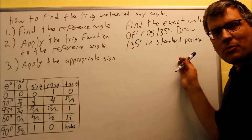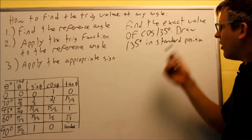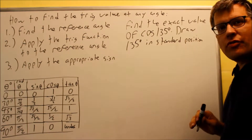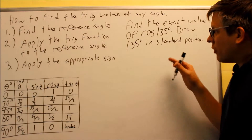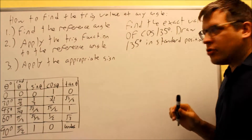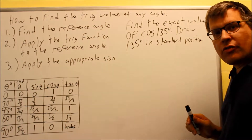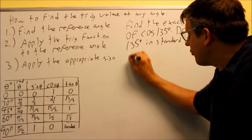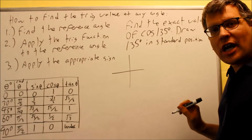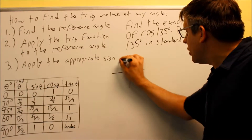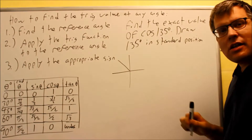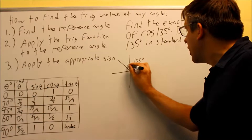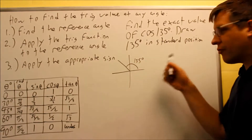Here's the next example problem: find the exact value of cosine 135. Draw 135 in standard position. We're going to follow three steps to do that. Drawing 135 in standard position tells us which reference angle formula to use. 135 would be between 90 and 180, so right here is our angle 135 degrees. That's the first step.